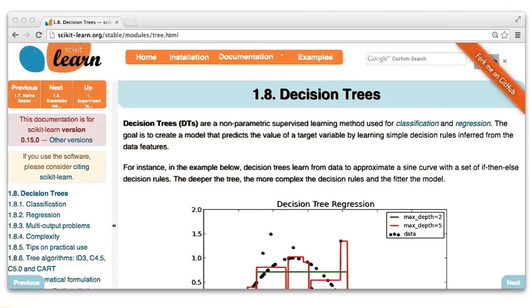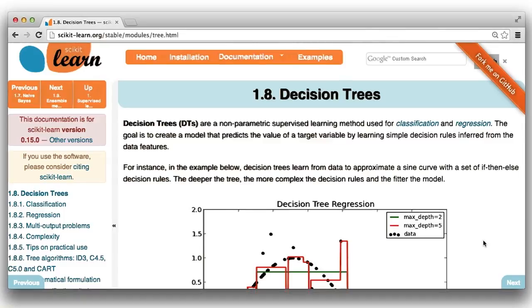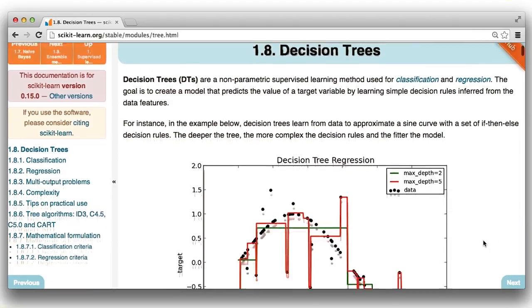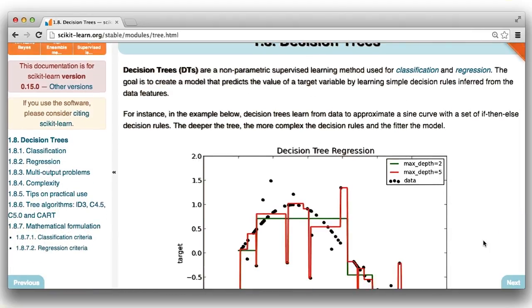To understand what parameters I have available to me, I've gone back to the sklearn documentation. So this should look kind of familiar. We found this through Google, remember?